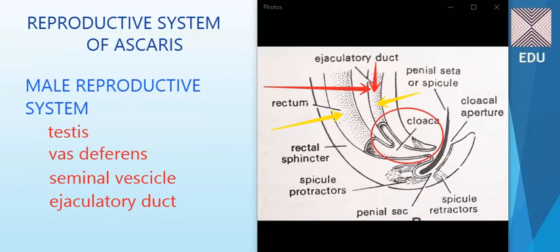The cloaca is present only in the male, not in the female. In the female, there is a separate anus, and the genital opening is called the female genital pore or gonopore in the case of female Ascaris.